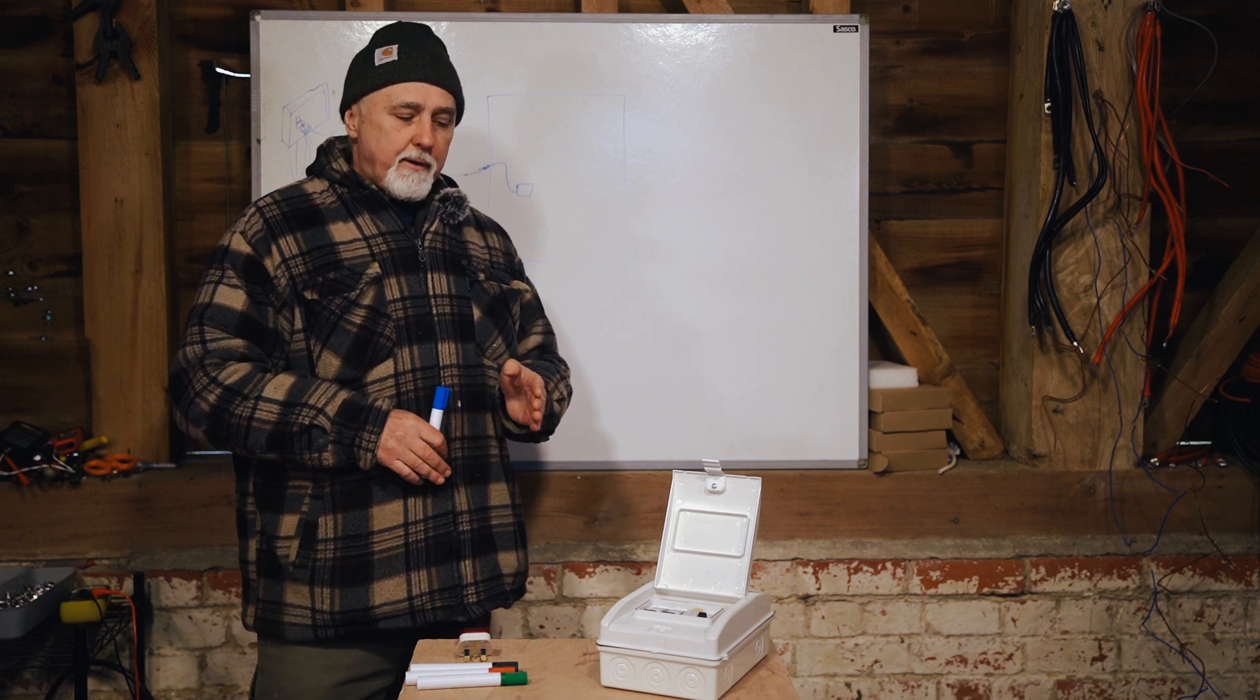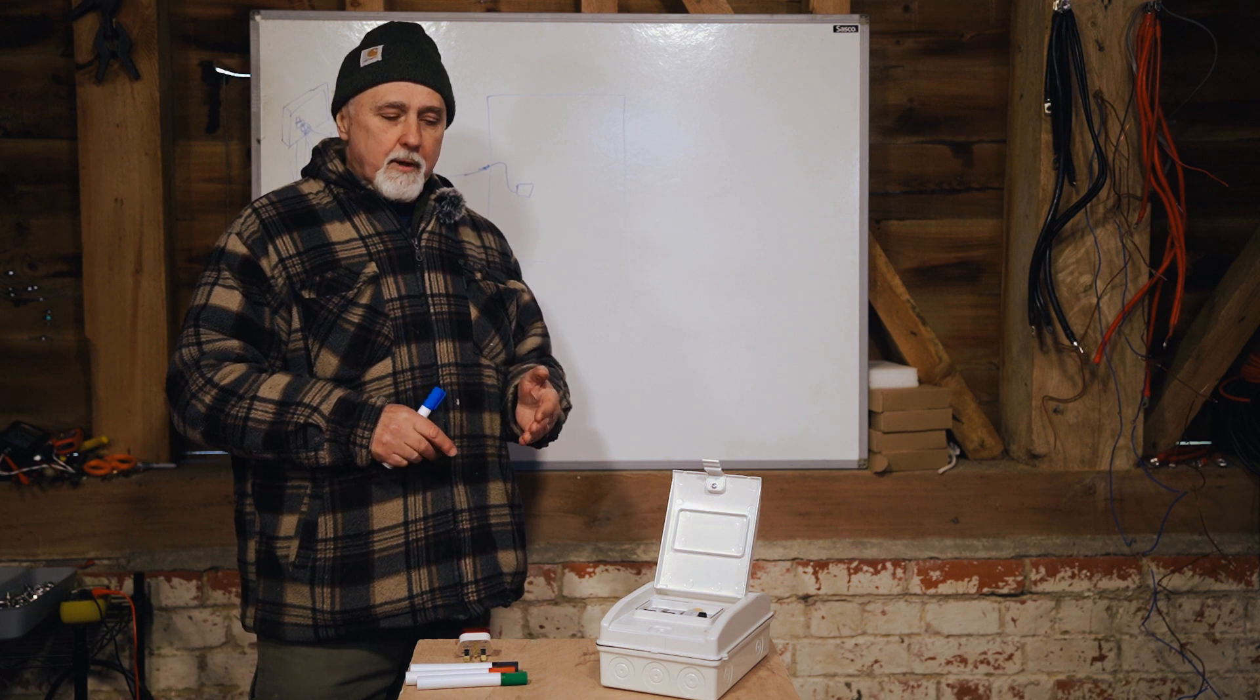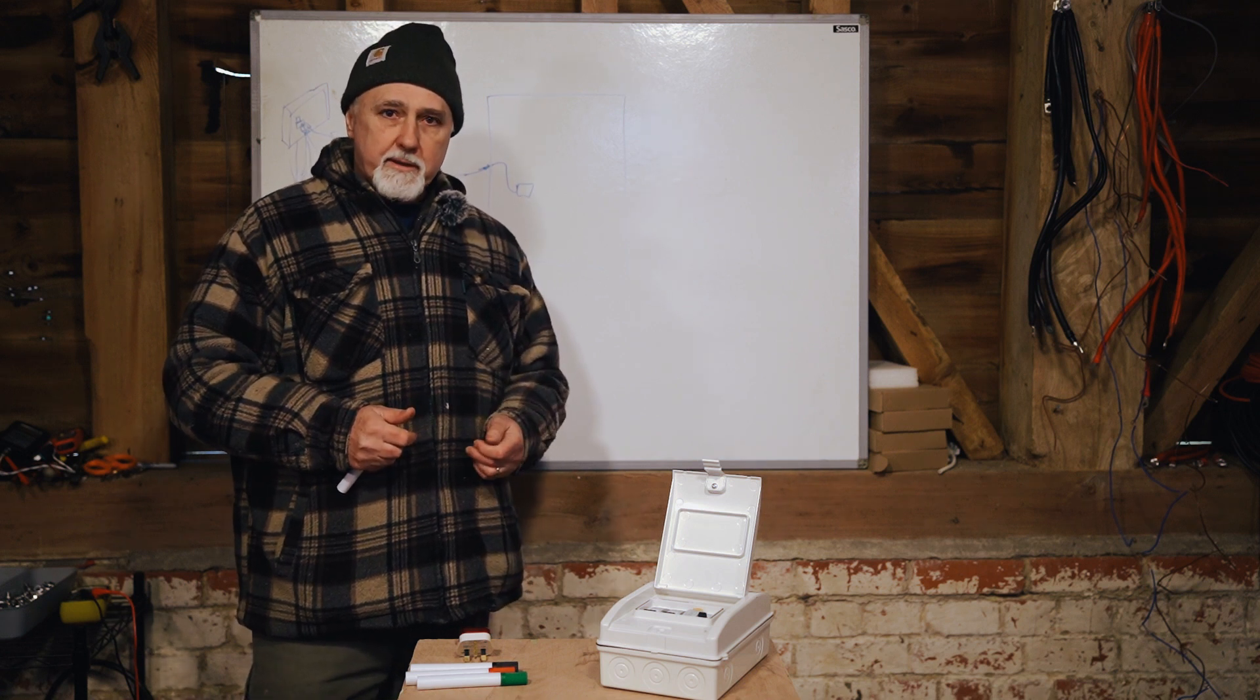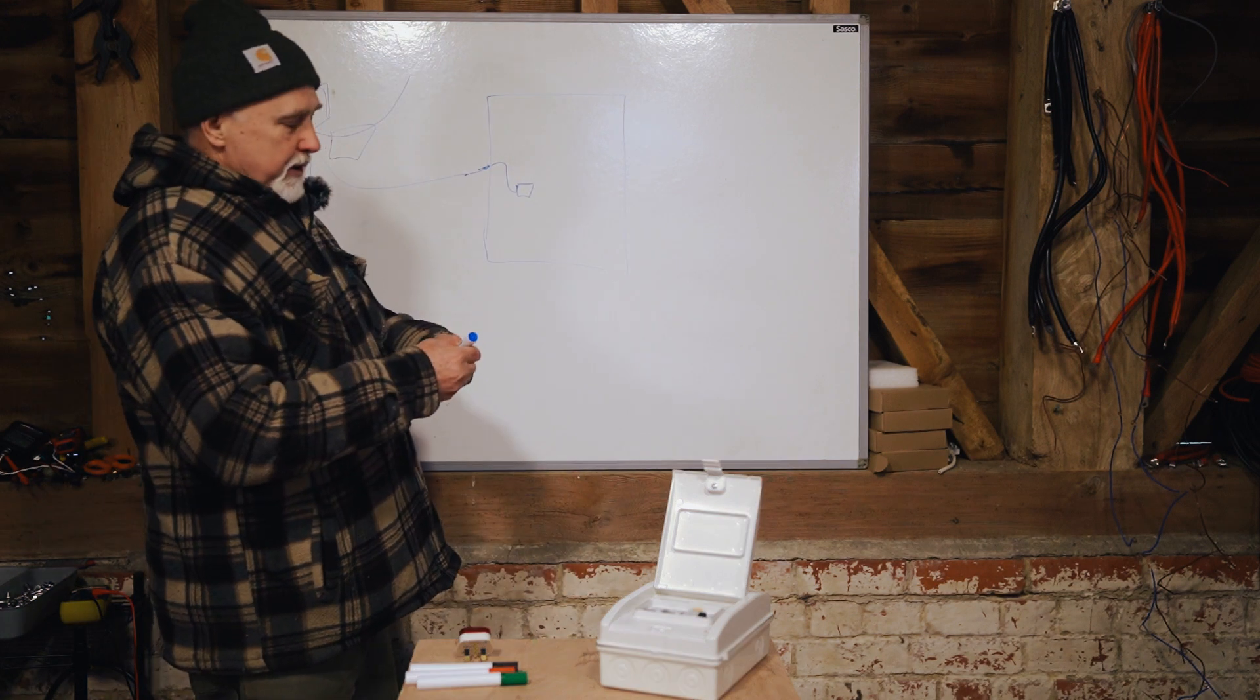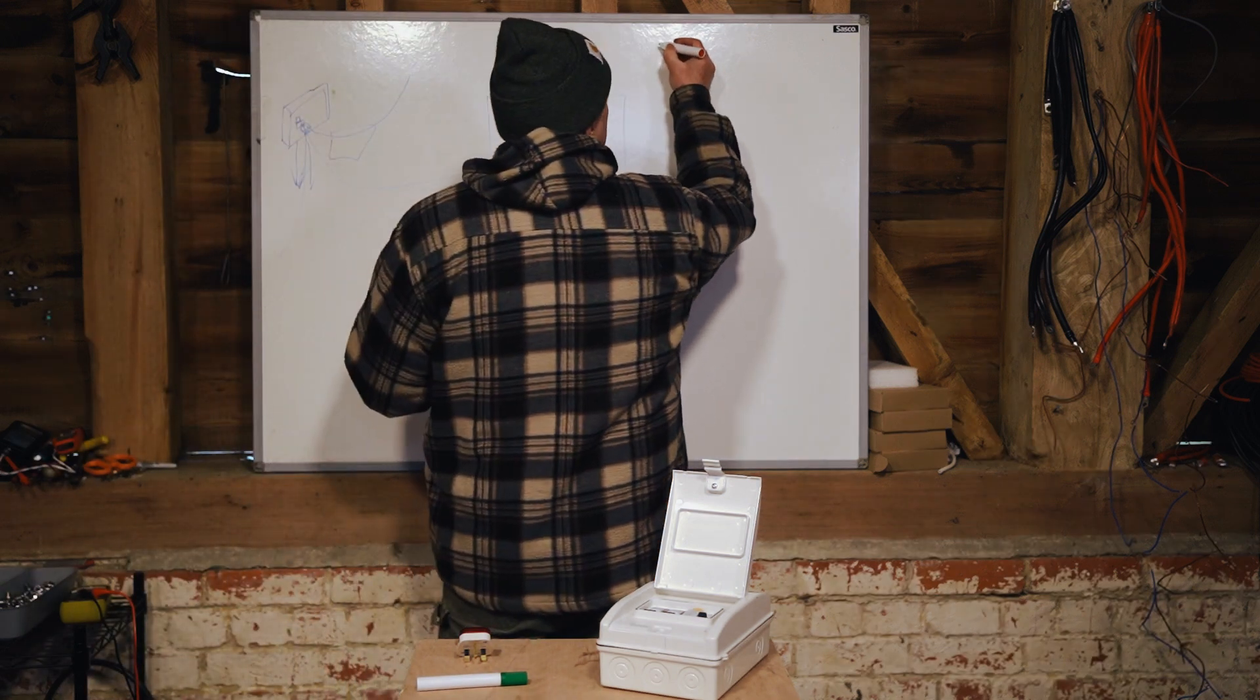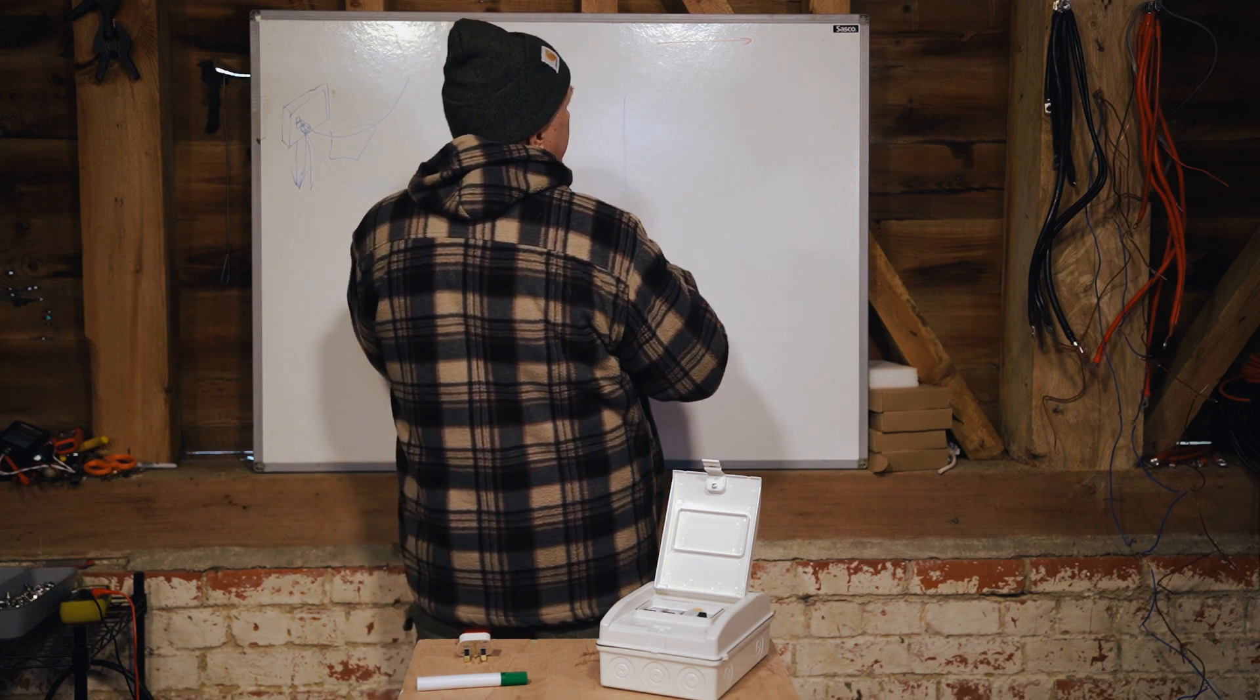So if I just be very explicit, an RCD does not protect you from holding the live and neutral and shocking yourself or a dead short or something like that. That's not what they're designed for. So basically, in a nutshell, if you've got your positive and your negative, so you've got your positive coming here and your negative running back.